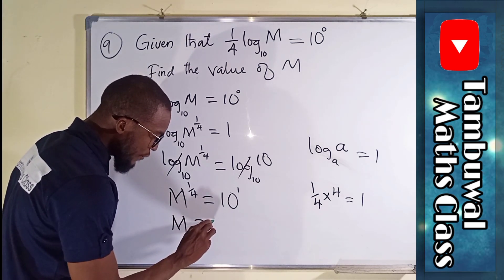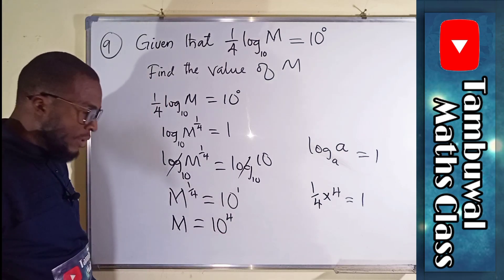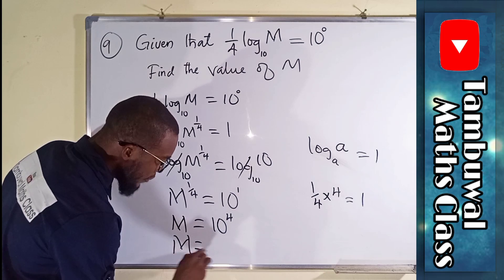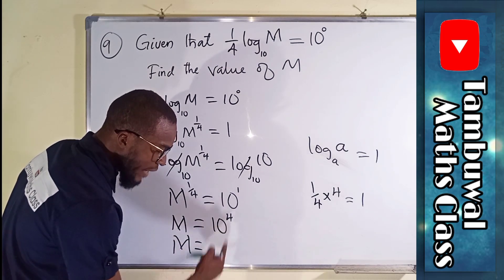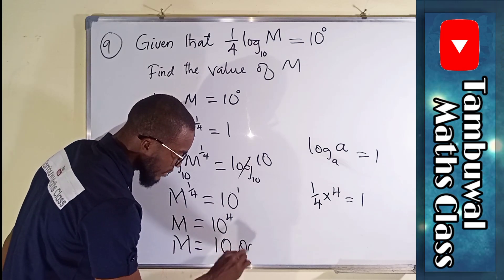And to the right, we have 10. 4 times 1 is 4. But M, finally, if you expand this 10 times 10 times 10 times 10, you should obtain 10,000.